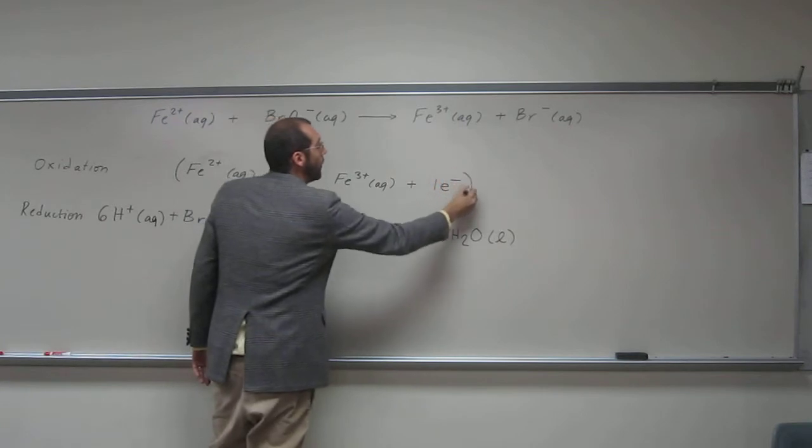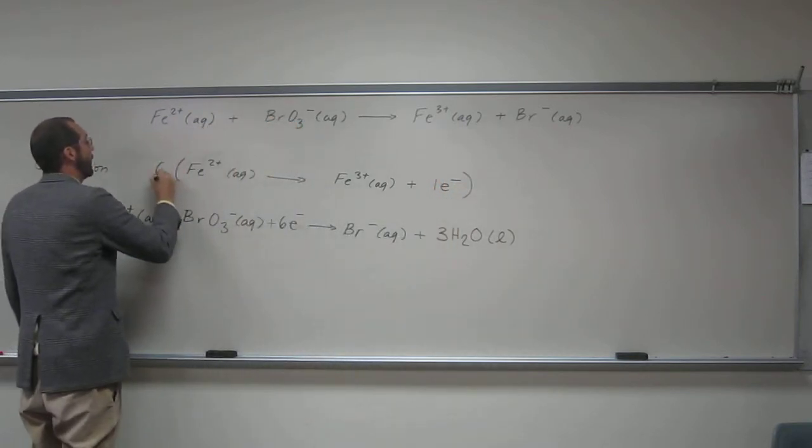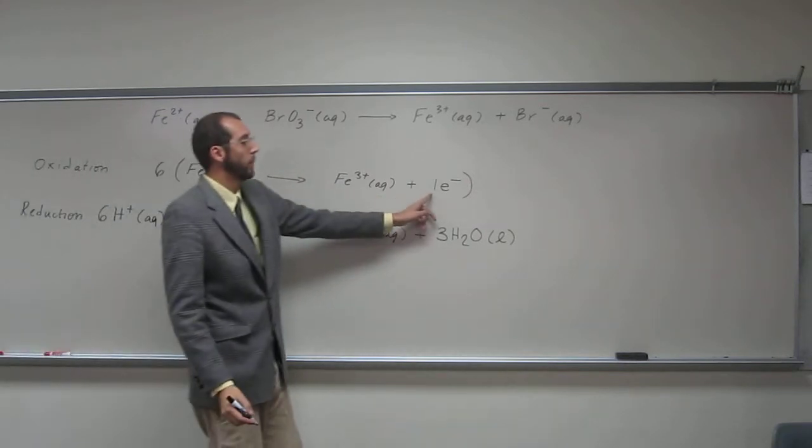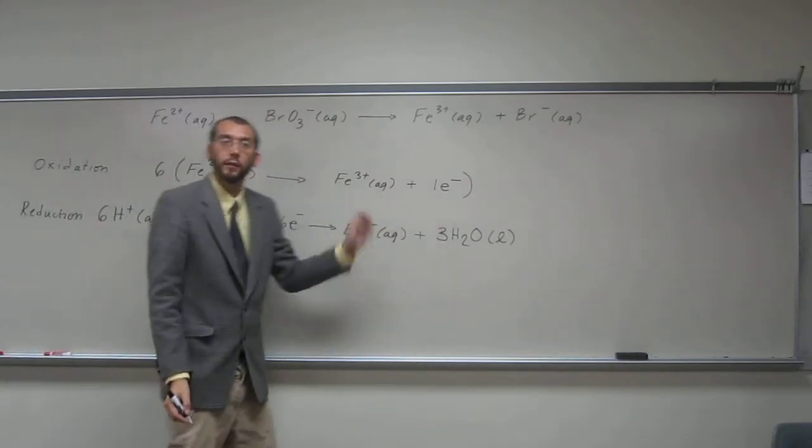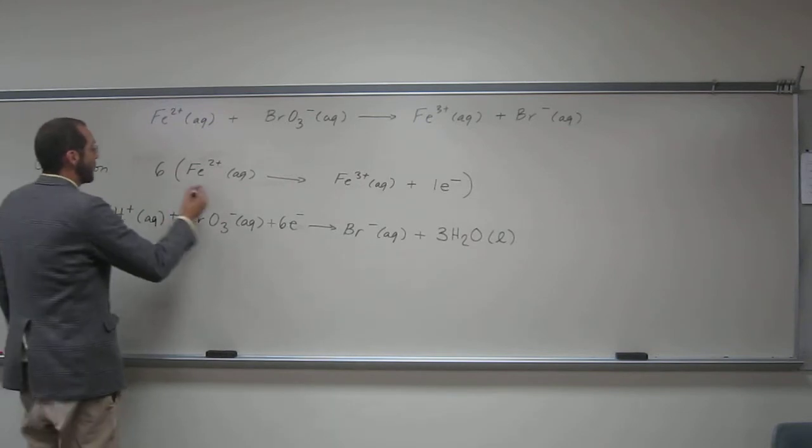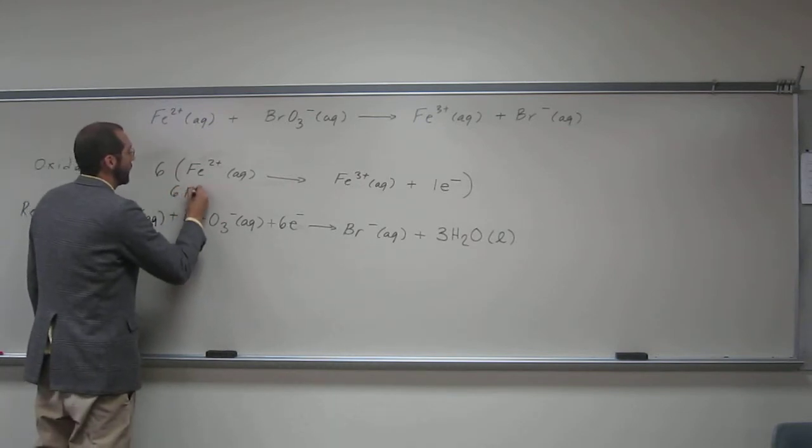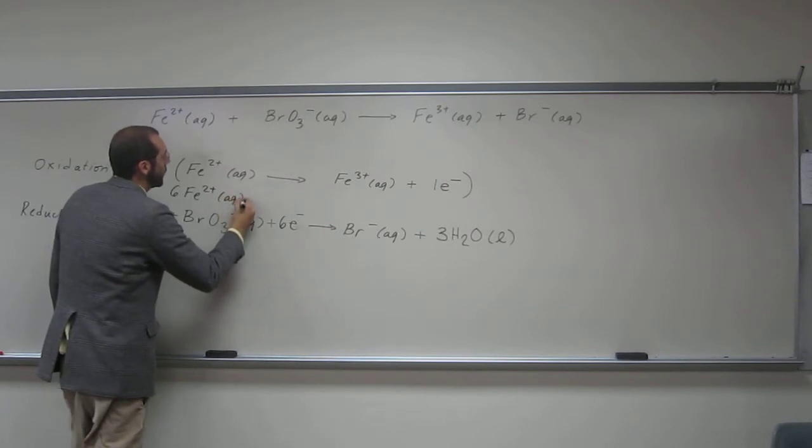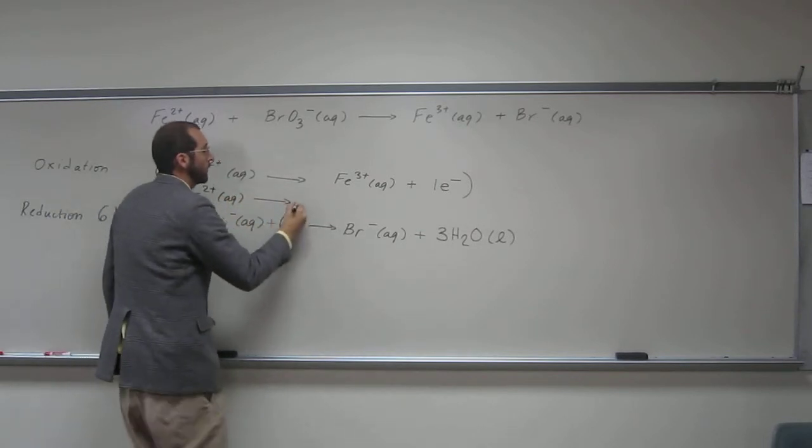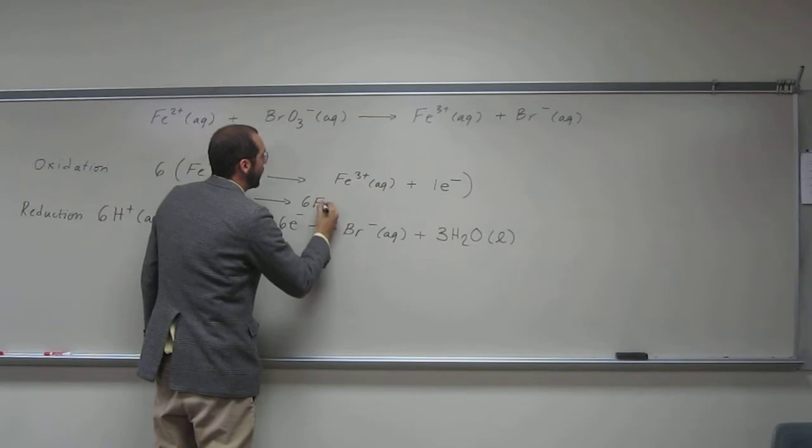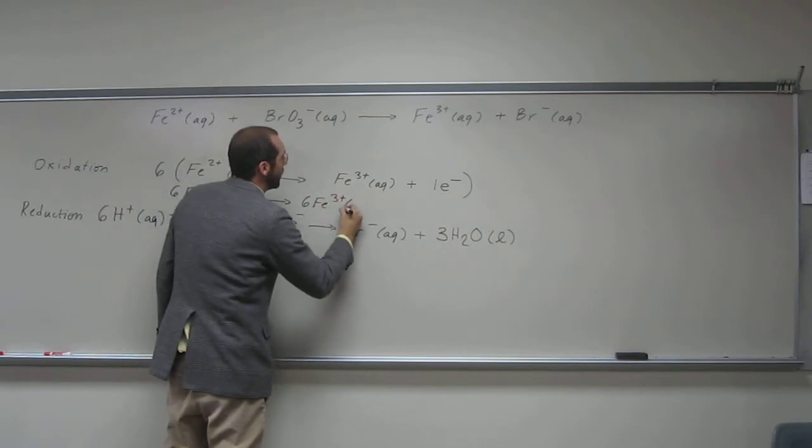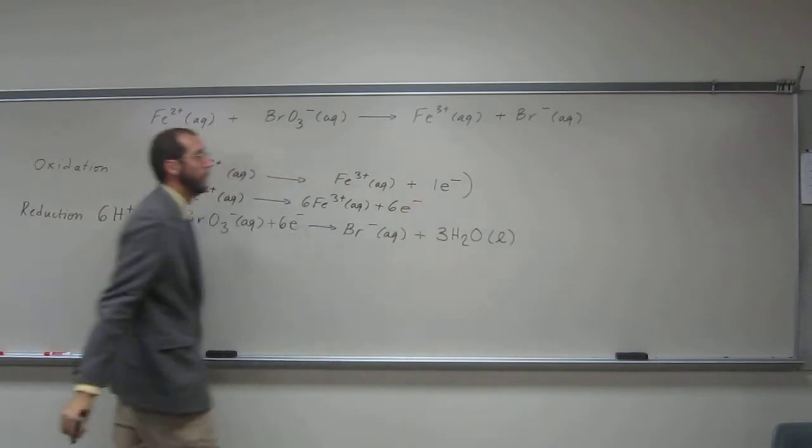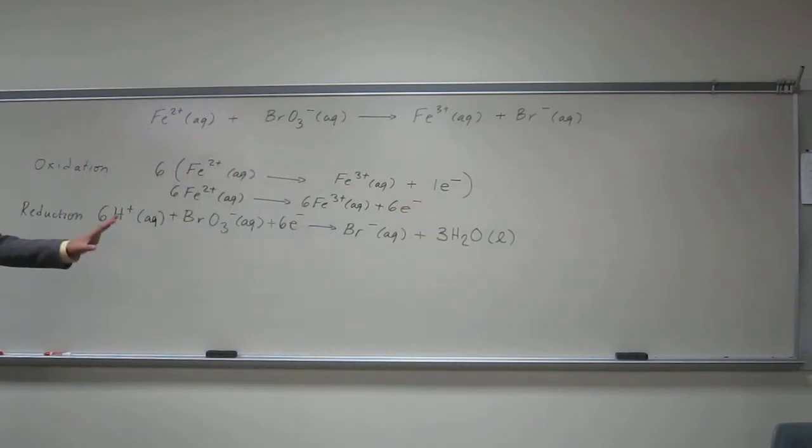We take the whole reaction equation and multiply it by 6. Why? Because we need to multiply 1 by 6 to get 6. So now let's just multiply it through, so 6 Fe²⁺ aqueous goes to 6 Fe³⁺ aqueous plus 6 electrons, does that make sense there?